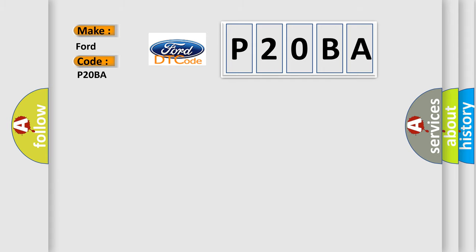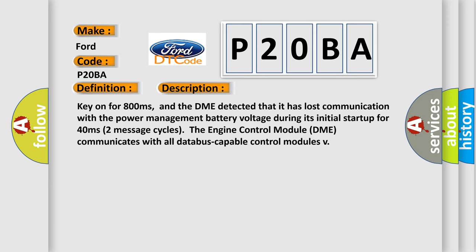The basic definition is Lost communication with power management battery voltage. And now this is a short description of this DTC code. Key on for 800 milliseconds, and the DME detected that it has lost communication with the power management battery voltage during its initial startup for 40 milliseconds.